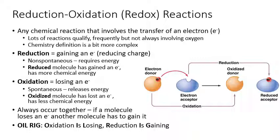When the other molecule involved loses its electron, we say it has been oxidized, and it has less chemical energy than before. So when an electron moves from one molecule to another, you're also transferring chemical energy from the oxidized molecule to the reduced molecule. It can be hard to remember which is which. You might think reduction means less electrons, but actually it gains an electron — it's called reduction because gaining a negative charge reduces the charge of the molecule. We can always remember using the mnemonic OIL RIG: Oxidation Is Losing, Reduction Is Gaining.